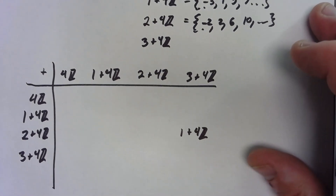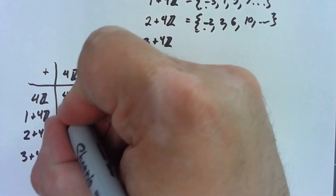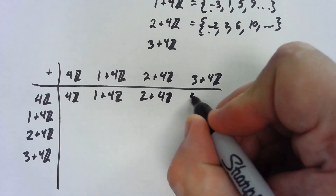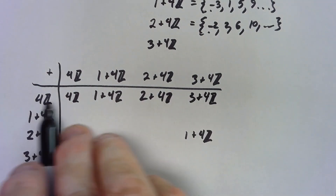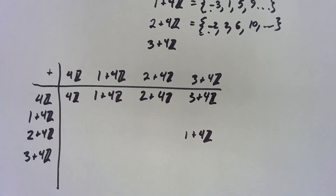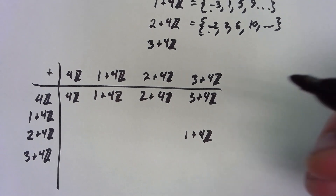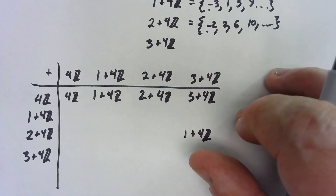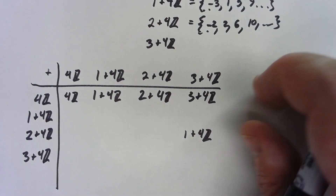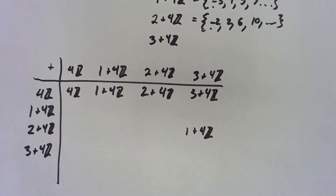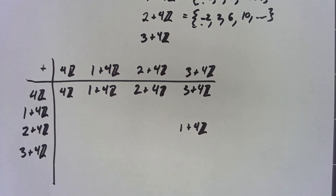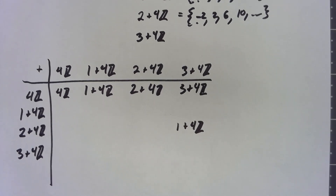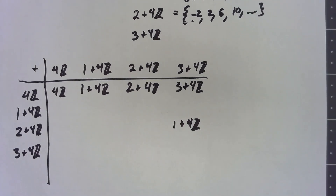If you continue filling out the addition table with elements 4Z, 1 plus 4Z, 2 plus 4Z, and 3 plus 4Z, it's easy to see that 4Z is acting as an identity element. In fact, going through the whole table you quickly see that we're effectively getting mod 4 arithmetic. I suggest you go ahead and fill out the rest of the addition table and also create the table for the multiplication operation, which will again be isomorphic to mod 4 multiplication.